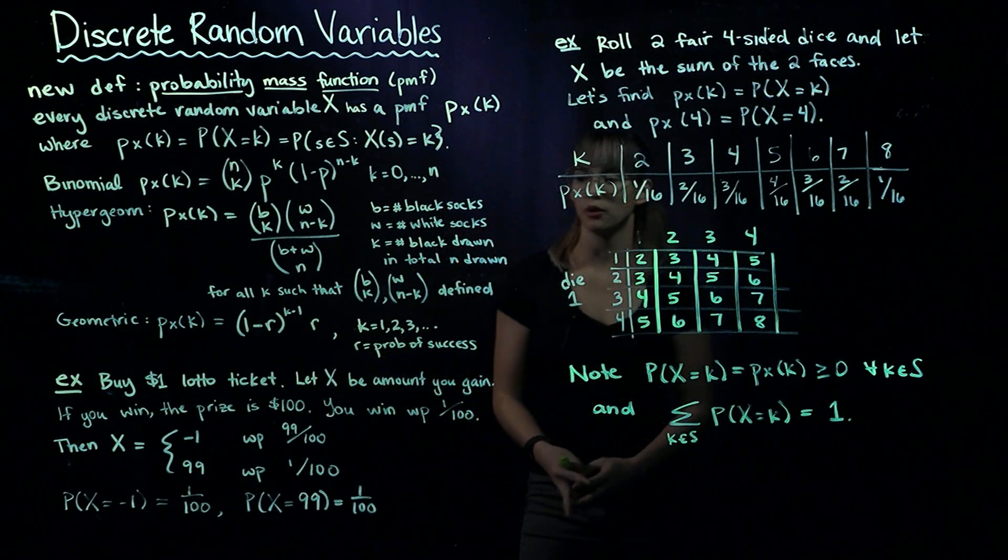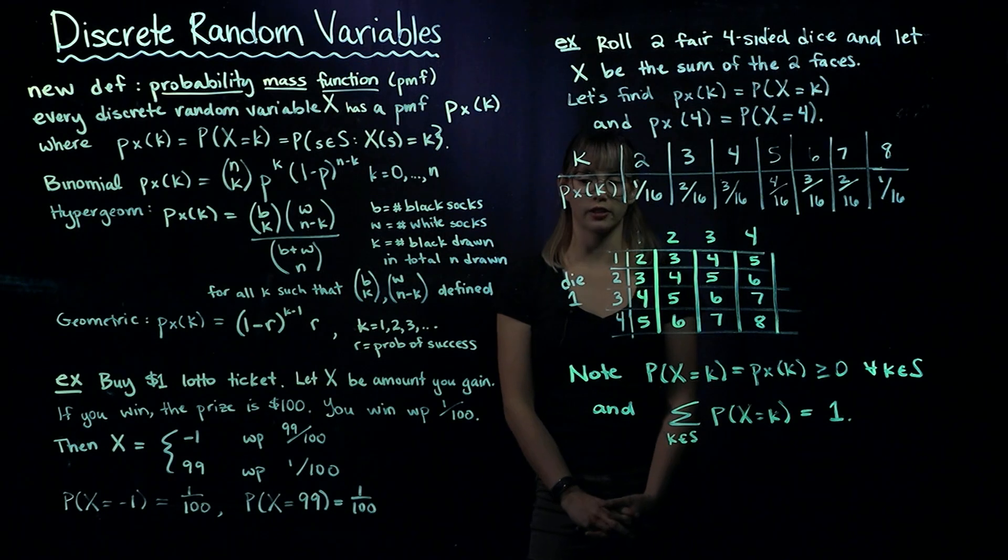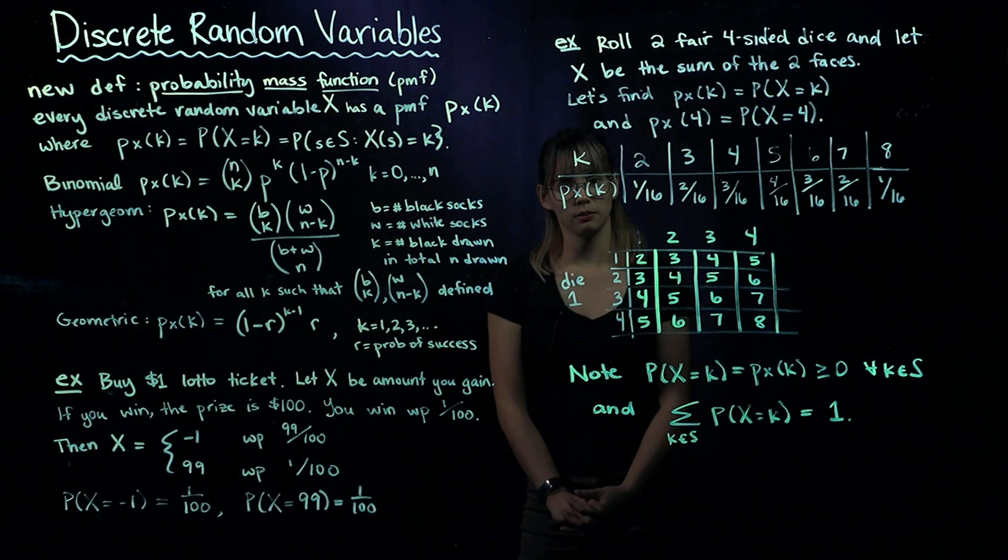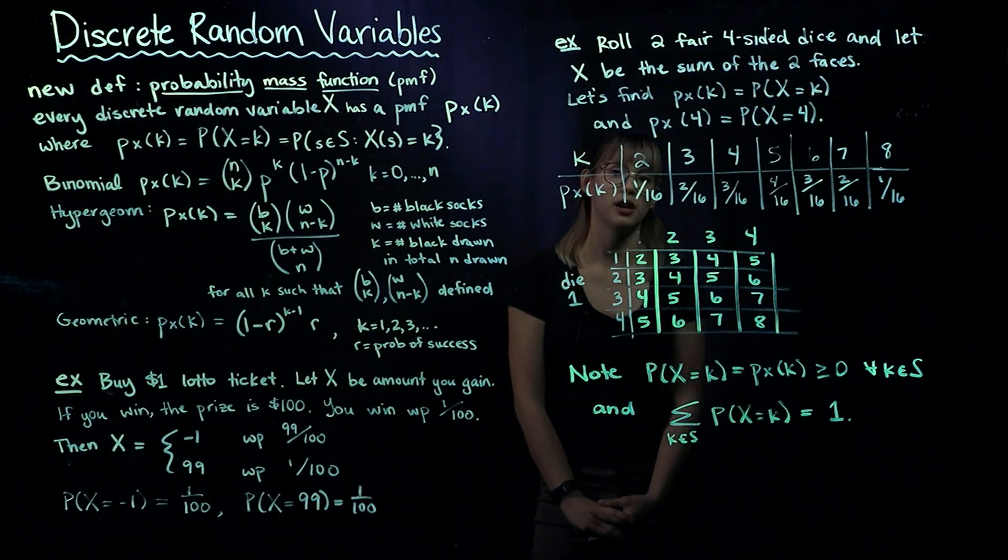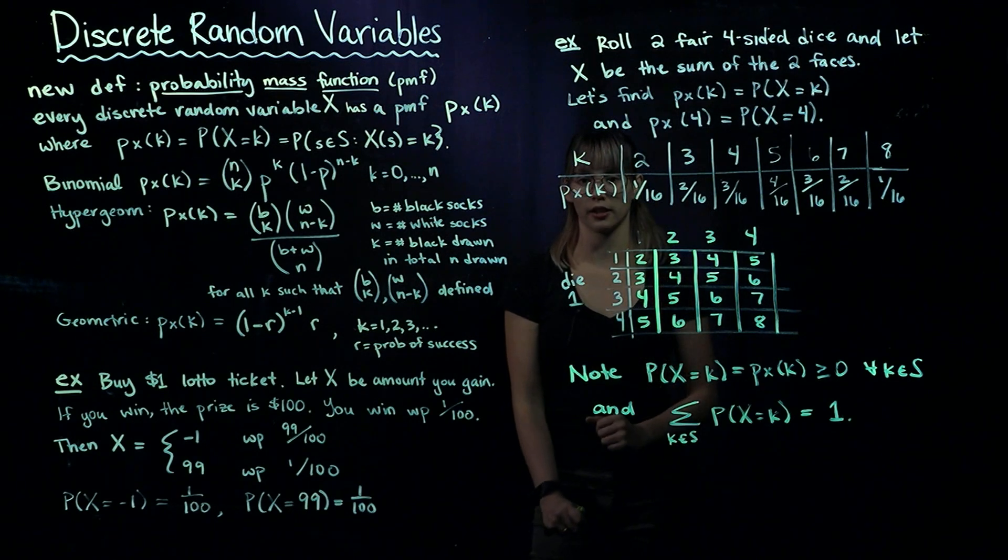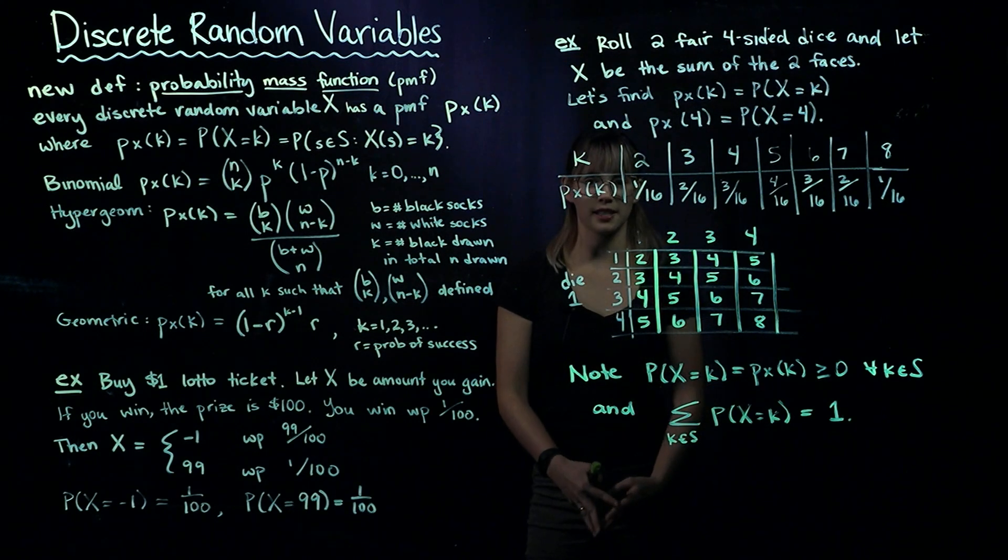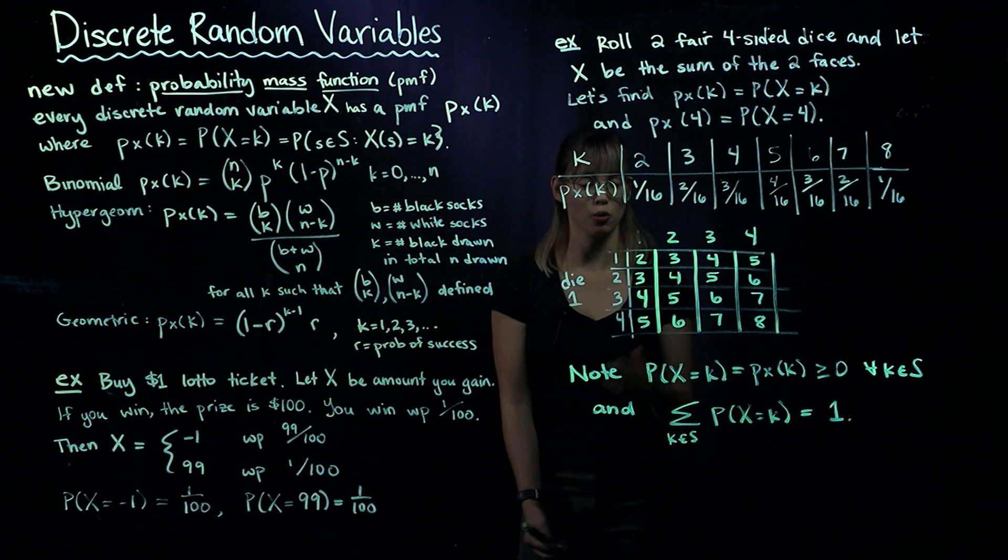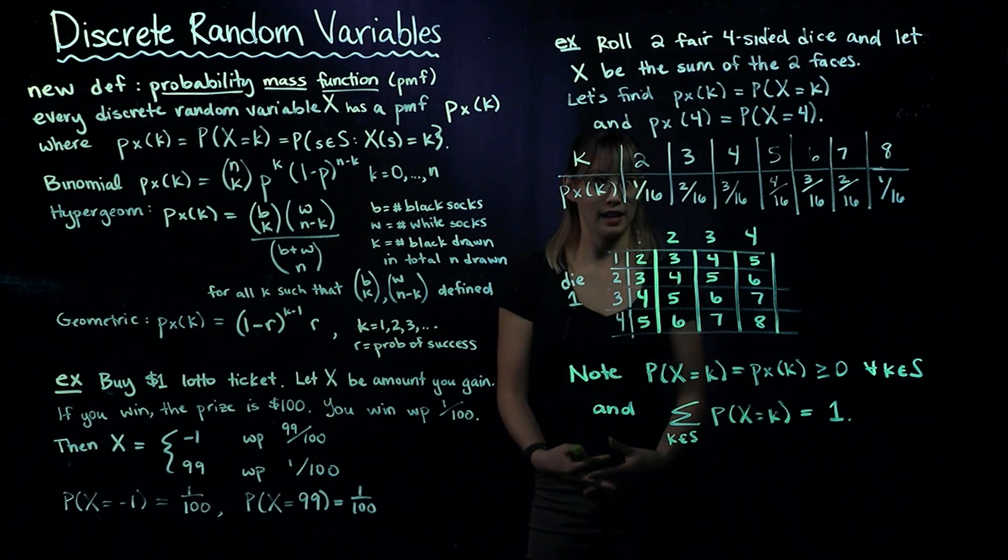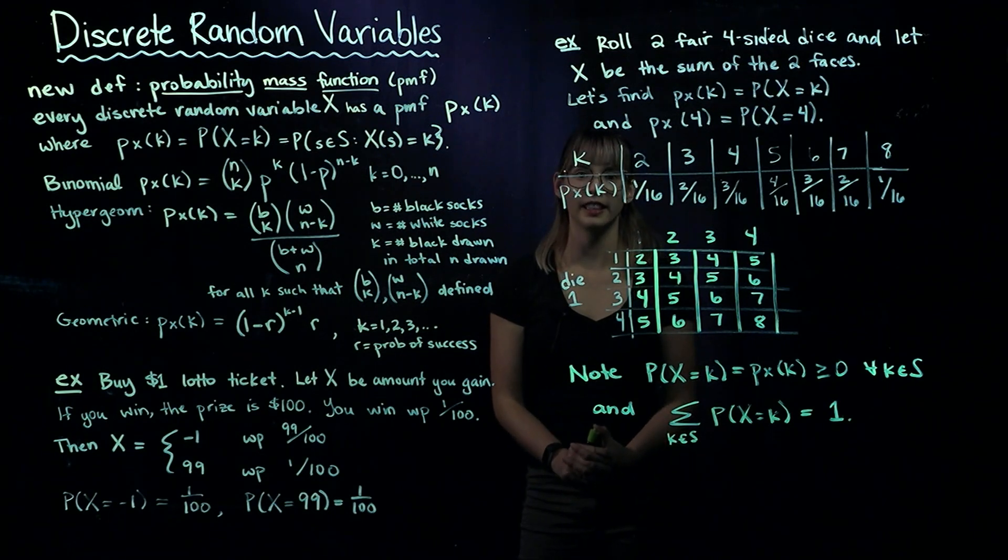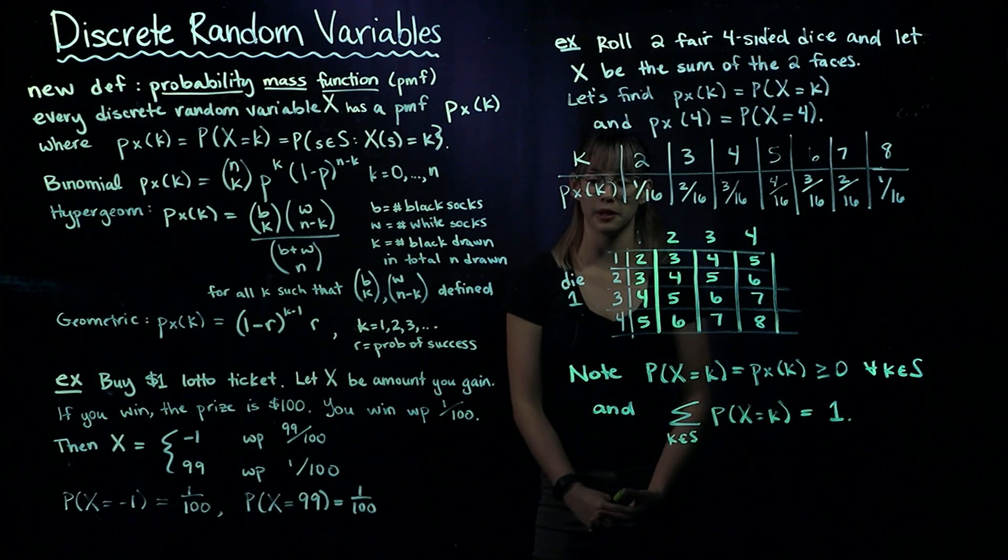In this first example, we have a one dollar lottery ticket. X is the amount of money you gain. Since you pay one dollar, if you lose, you gain negative one dollar. If you win, the prize is one hundred dollars, but you already paid one dollar, so you gain ninety-nine dollars. The probability of winning is 1 out of 100.